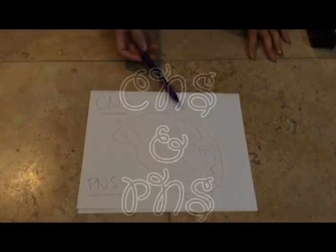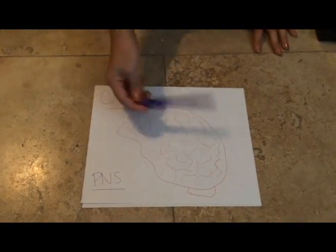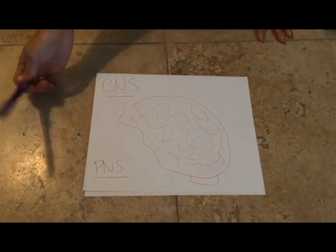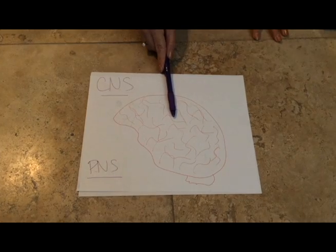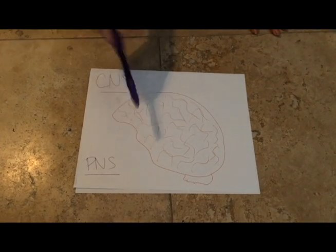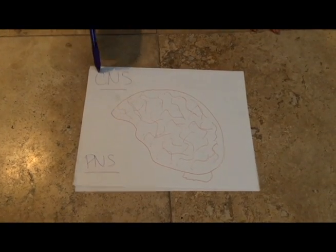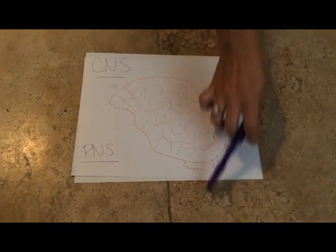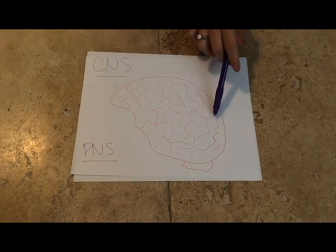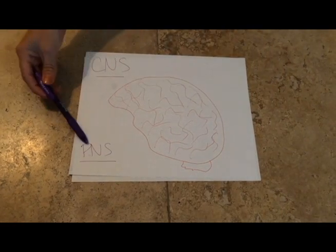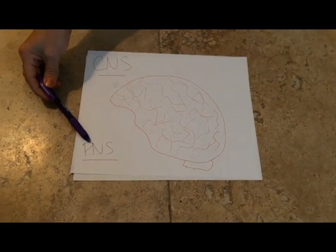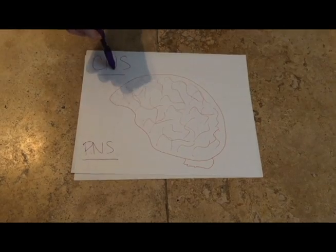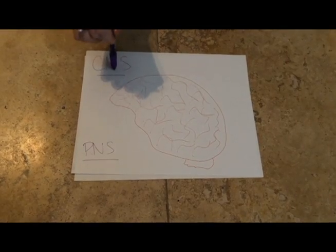So before we start off, I'm going to show you the two systems that we use to perform action potential. This is your brain, and we have the central nervous system, which consists of the brain and the spinal cord. And then we have a peripheral nervous system, which consists of the nerves leading to the CNS.